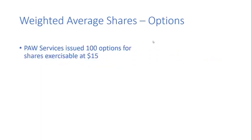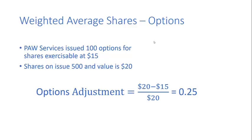What about options? Options may also dilute the earnings per share number. Here we have Poor Services again. It has issued 100 options for shares exercisable at $15. It has 500 shares on issue and they're currently valued at $20 per share. The first thing we need to recognise is that the options contain an element of shares which are going to be paid for and a dilutive component.